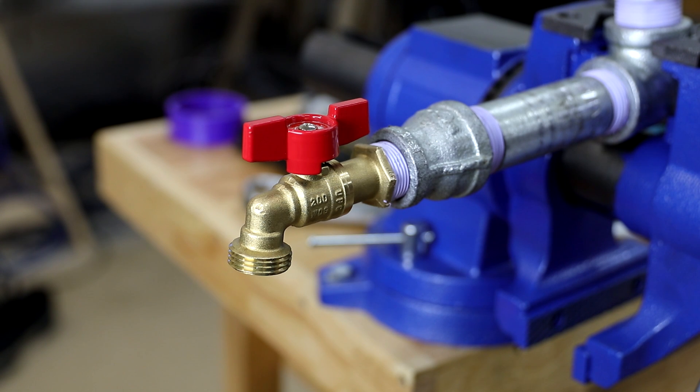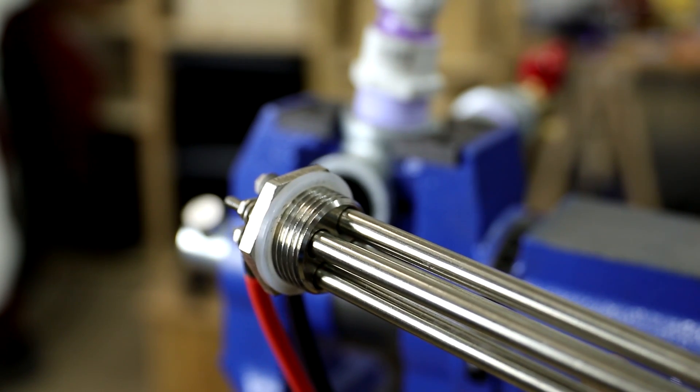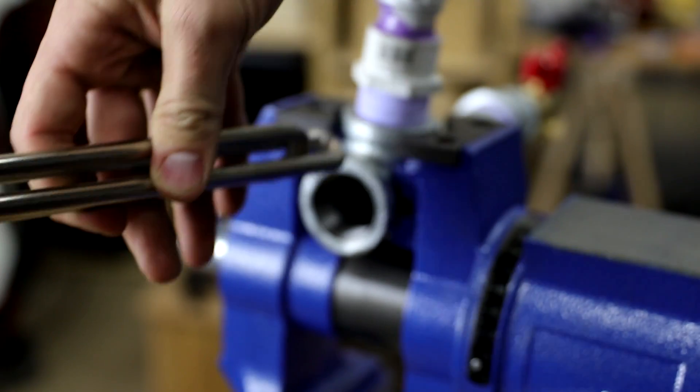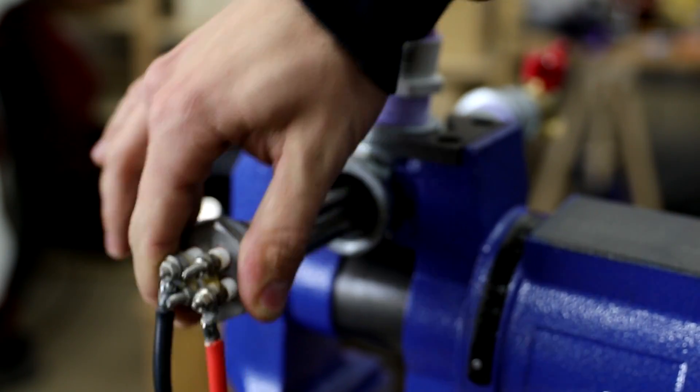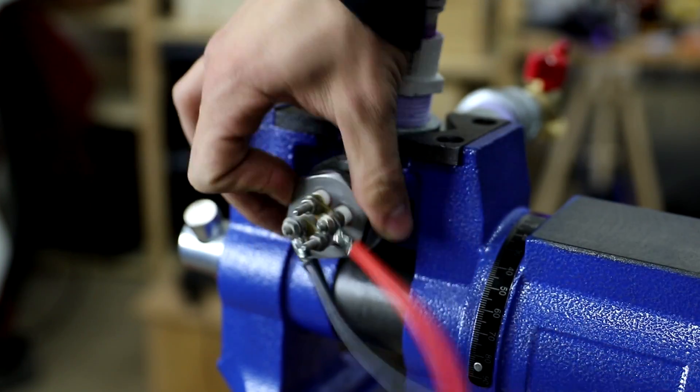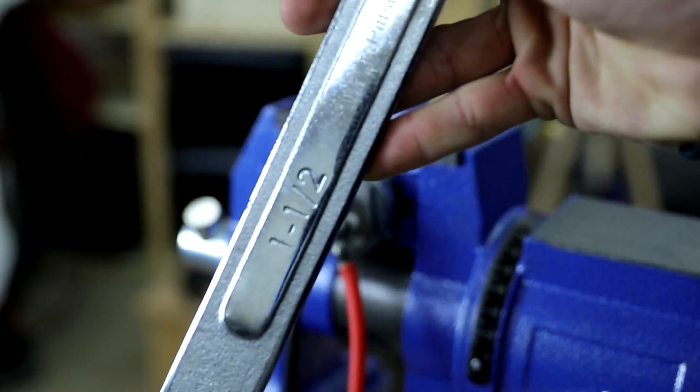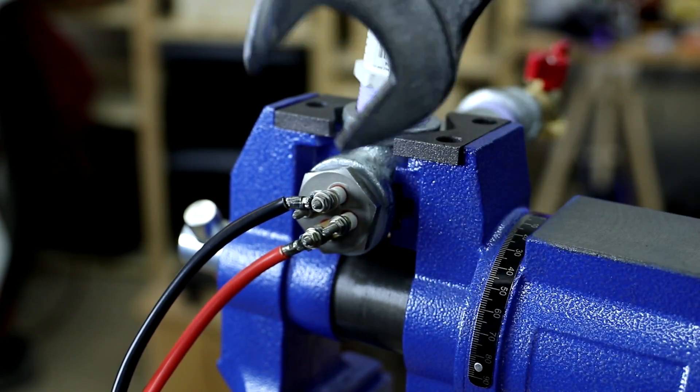I went ahead and threaded on my shutoff valve using a pair of channel locks and now we're ready to install our heating element. Since this heating element has an o-ring I don't need to apply Teflon tape but I can go ahead and get this in and it's a pretty tight fit. I have a nice inch and a half wrench that I can use to snug this down nice and tight so it doesn't leak.